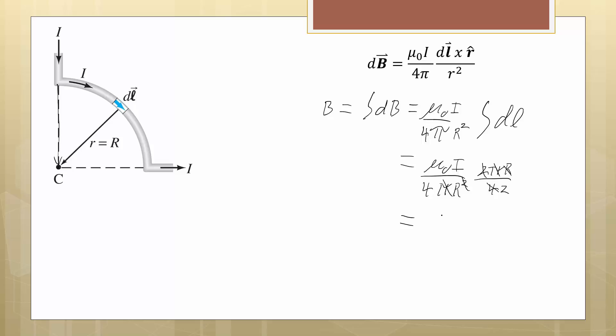So that becomes a 2, that cancels there, that cancels one of there, and as you might have guessed, we get a quarter of what we had earlier, so mu naught I over 8 R. And there you have it, Biot-Savart Law. Hooray! We'll see you next time.